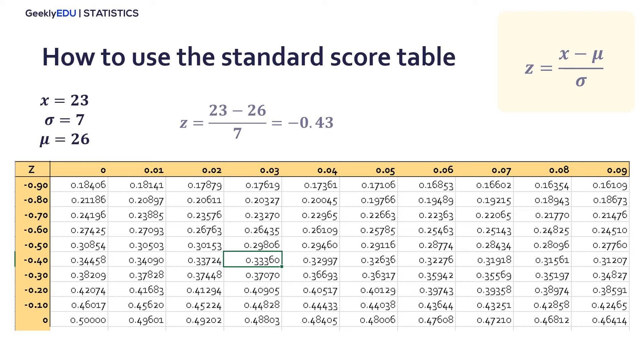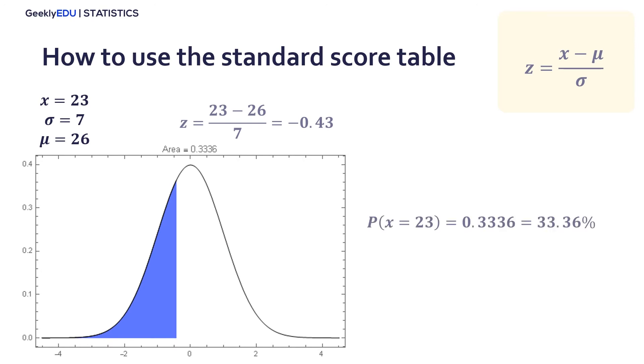And then, look for the second decimal. And the value between these numbers is our probability, equal to 0.3336, or 33.36%. If we see the representation with the graph of the standard normal distribution, we can find that the area under the curve when the value z is minus 0.43 is equal to the value we obtained from the table.